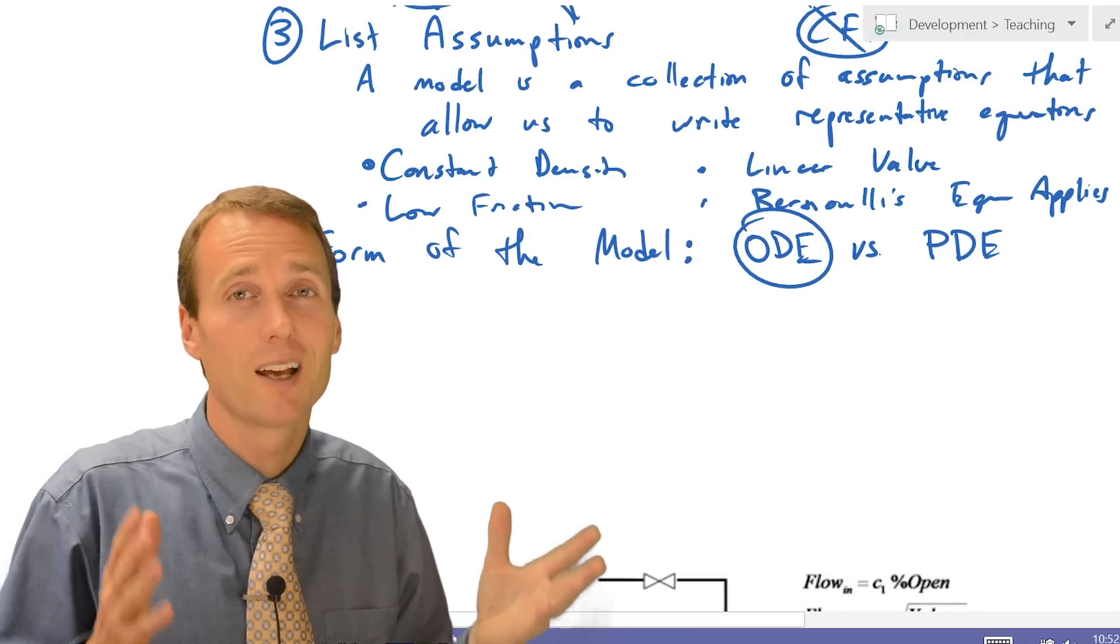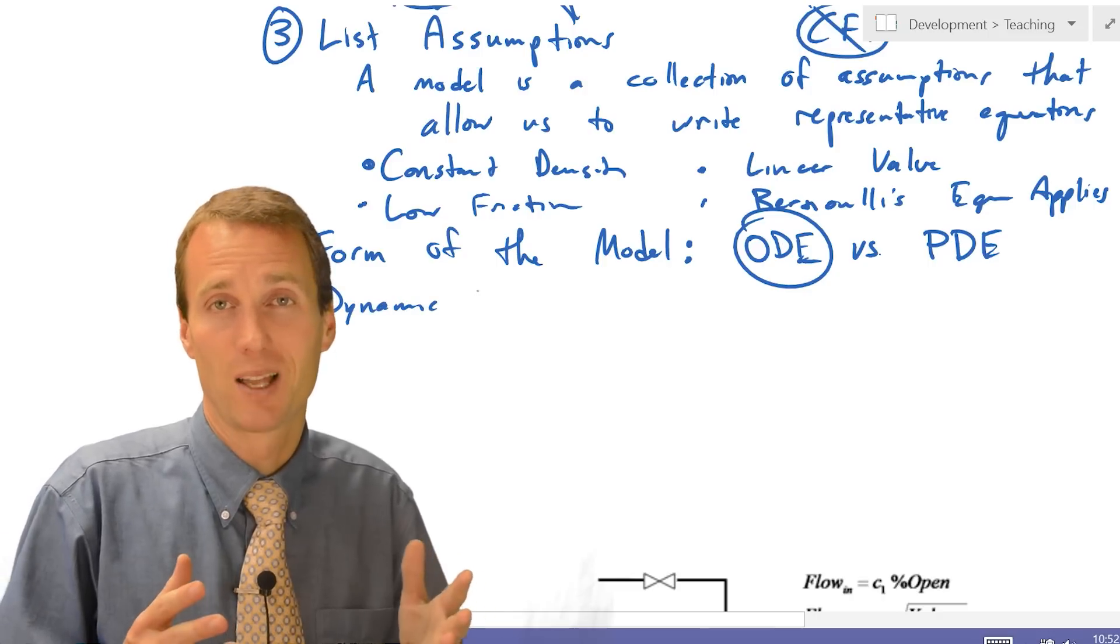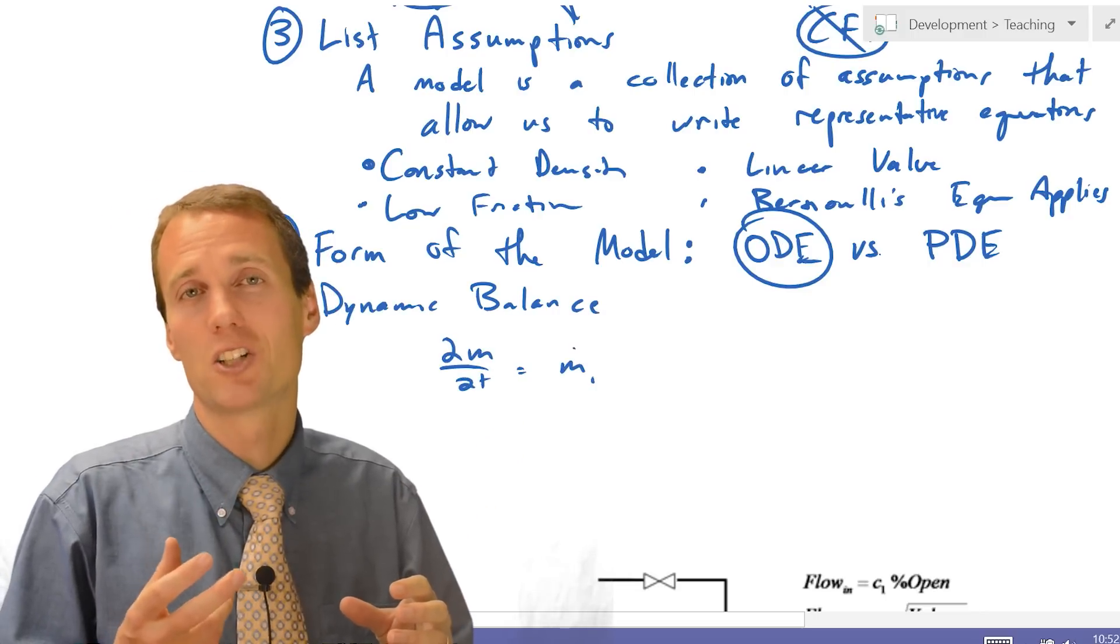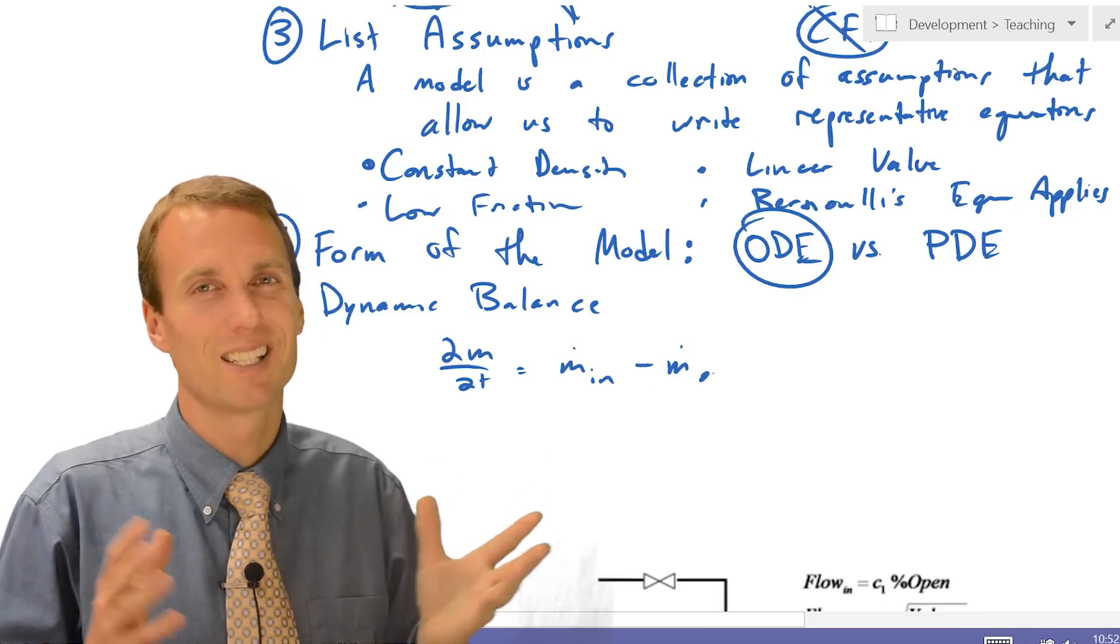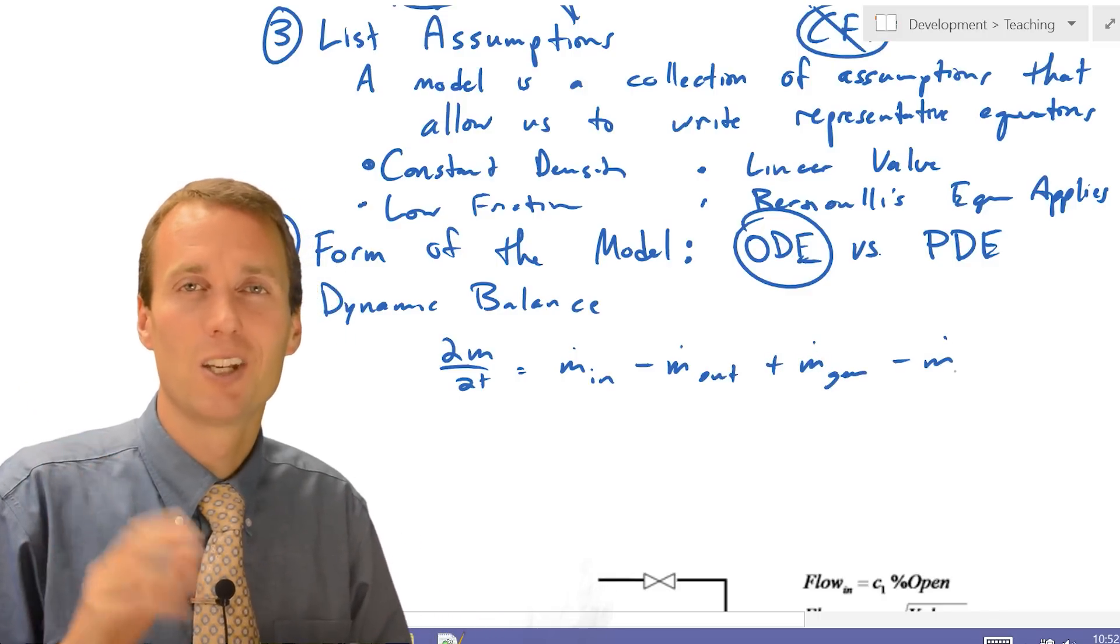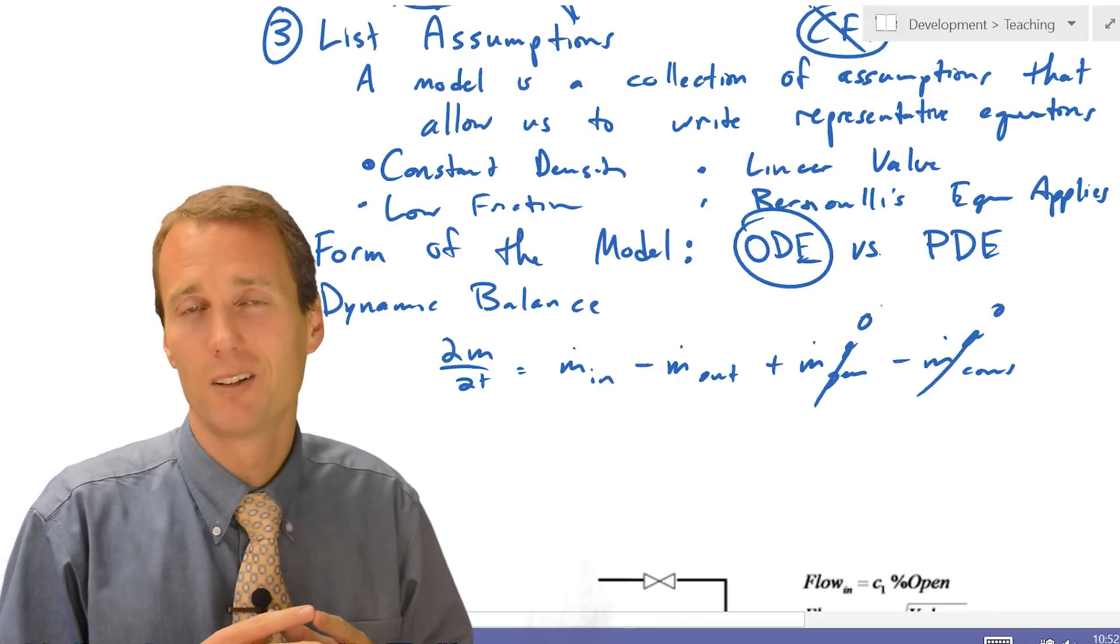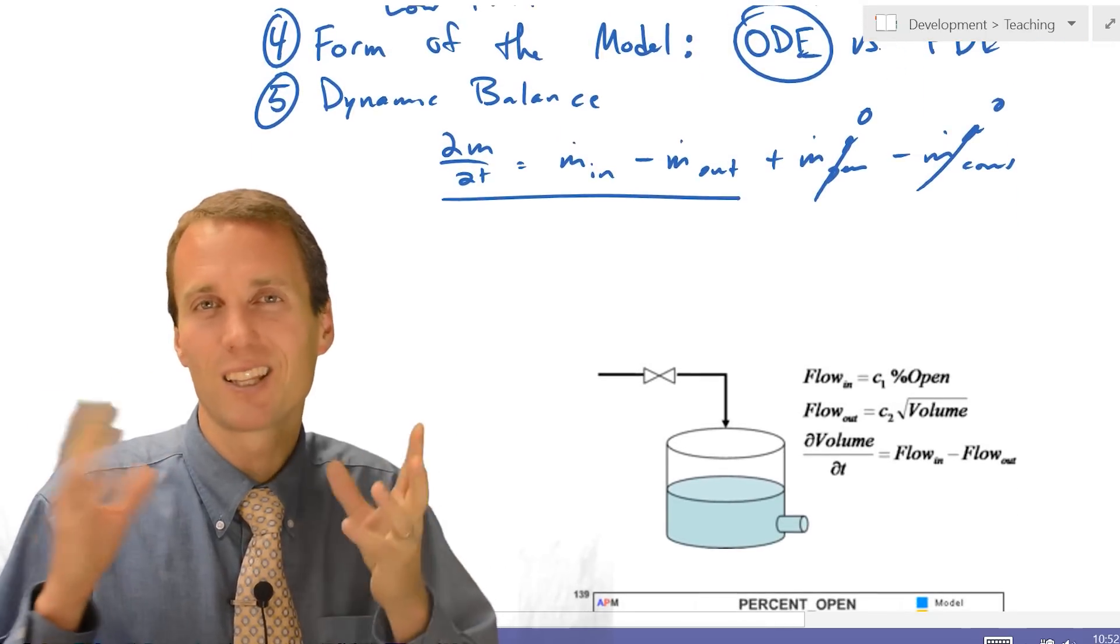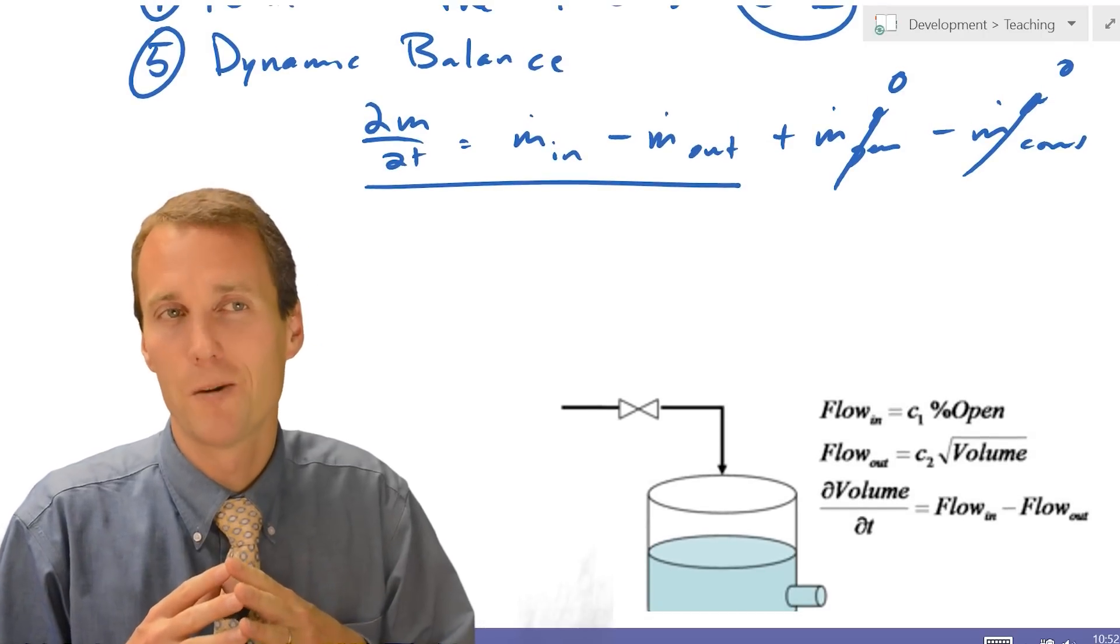So a fifth step is to go ahead and write a dynamic balance for our system. Now this case, we can use a mass balance. So I'm going to have accumulation equals in minus out plus generation minus consumption. Now, in mass balances, typically unless it's a nuclear application, you don't have generation or consumption. So let's just go ahead and throw away those terms. So I just have accumulation equals the mass flow rate in minus the mass flow rate out. And with my schematic that I've drawn, you can see that that's my boundary. Anything that goes into that boundary is going to be mass flow rate in. Anything that leaves that boundary is going to be mass flow rate out.